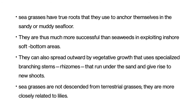Seagrasses have true roots that they use to anchor themselves in the sandy or muddy seafloor. They are thus much more successful than seaweeds in exploiting inshore soft bottom areas. They can also spread outward by vegetative growth that uses specialized branching stems — rhizomes — that run under the sand and give rise to new shoots.